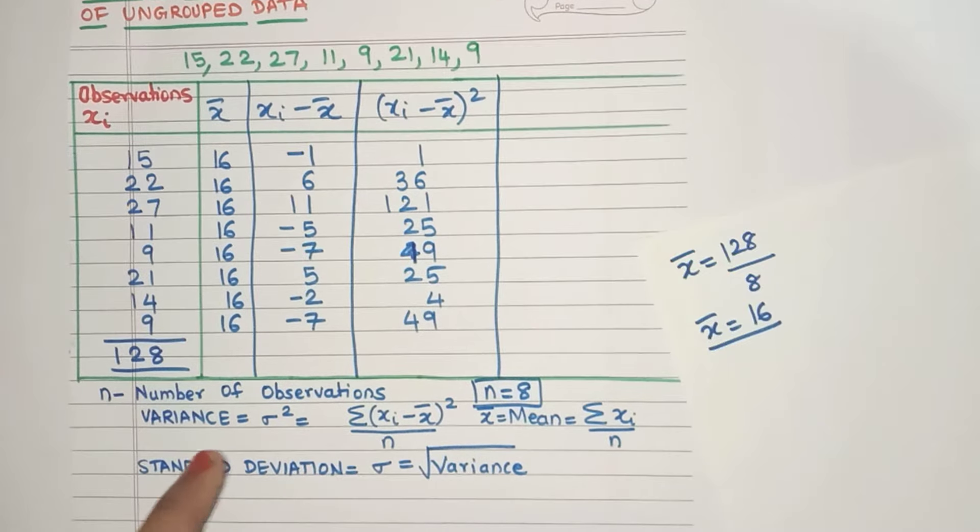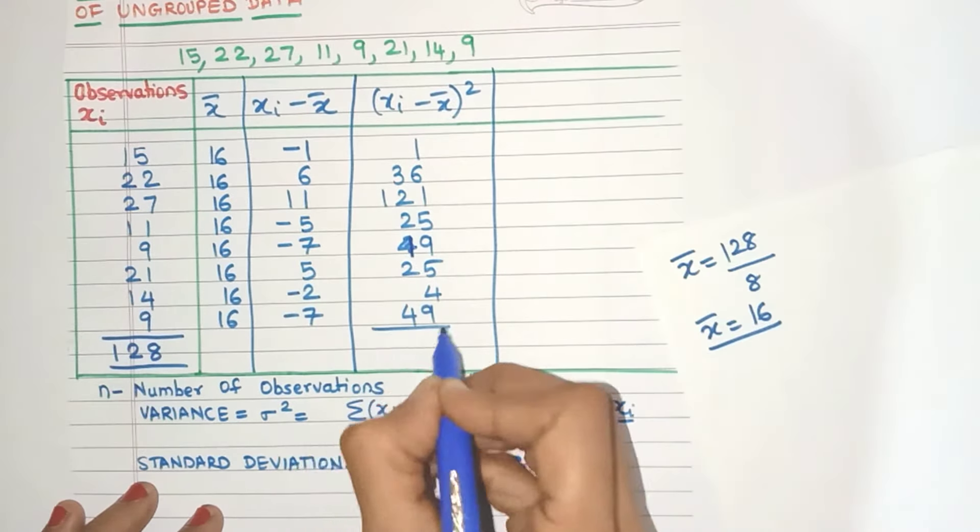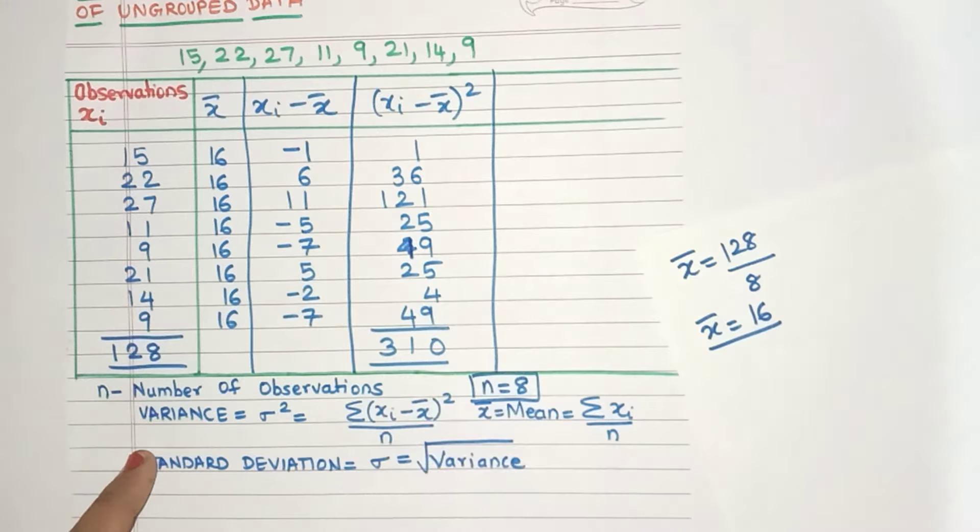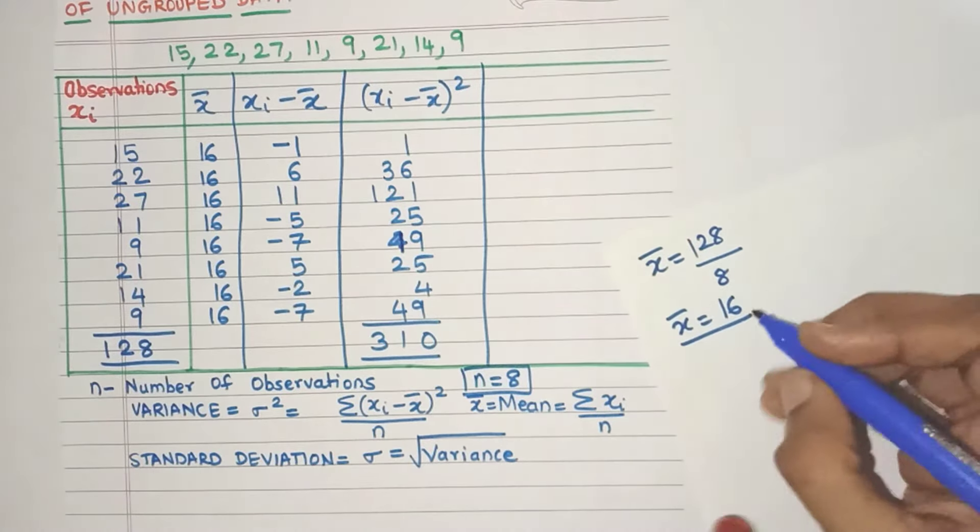Let's again see what do we need to do. Yes, we need to find the sigma of all this. We need to add all these squares up. So I've already done the addition. It comes out to be 310. You can verify. Now, what else do we need? We have all the data. So let's go ahead and find the variance.